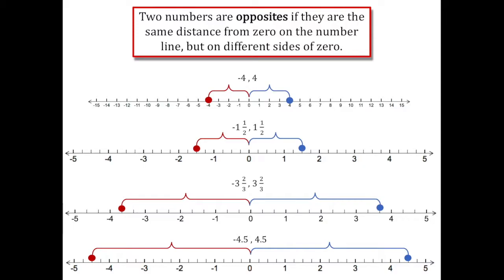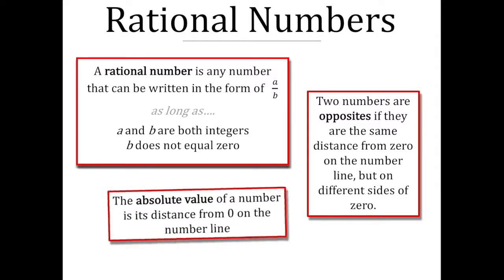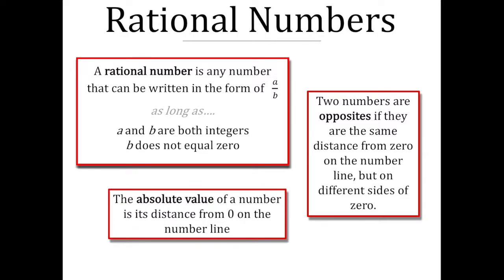So we've covered the concept of opposites and rational numbers. Now what about absolute value? As you already know, the absolute value of a number is its distance from zero on the number line, and even fractions have a distance.